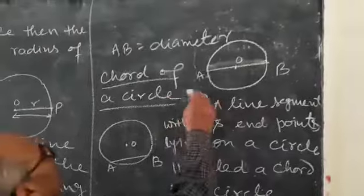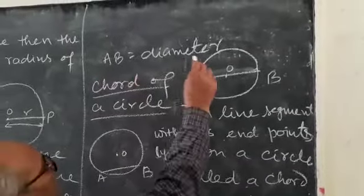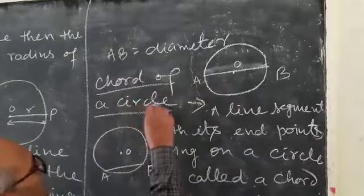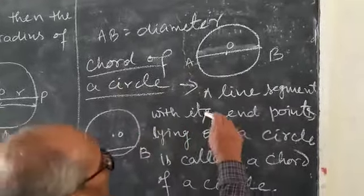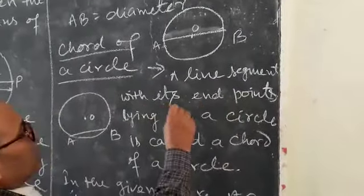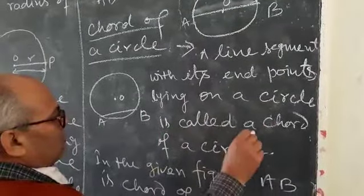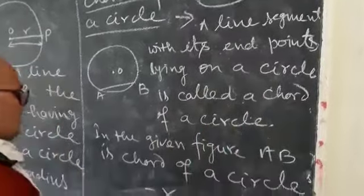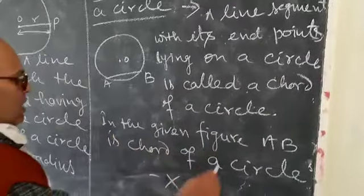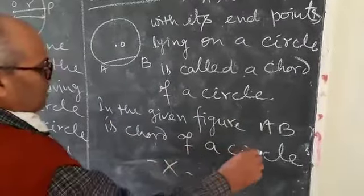In the given figure also, AB is the diameter. A chord of a circle: a line segment with its end points lying on a circle is called a chord of a circle. Therefore, in the given figure, AB is a chord.